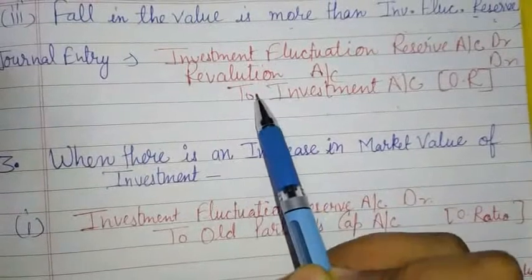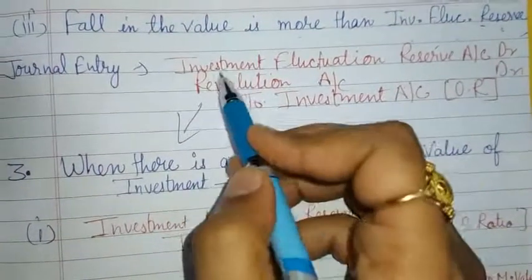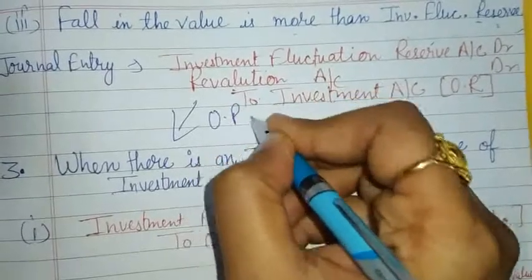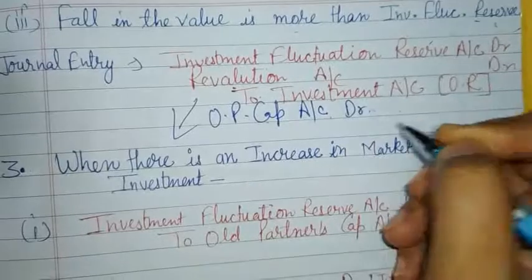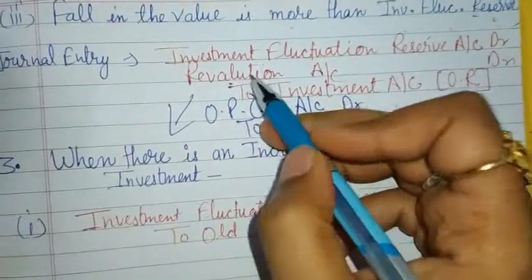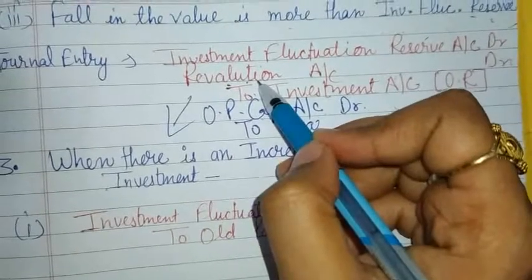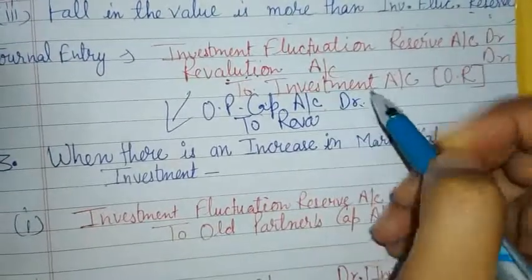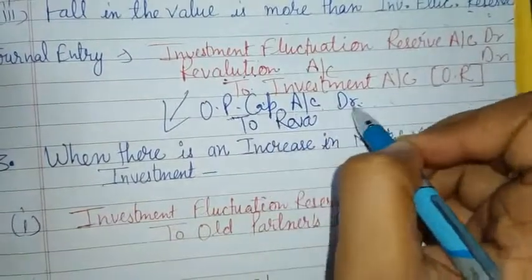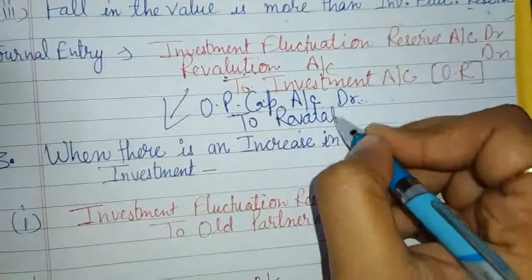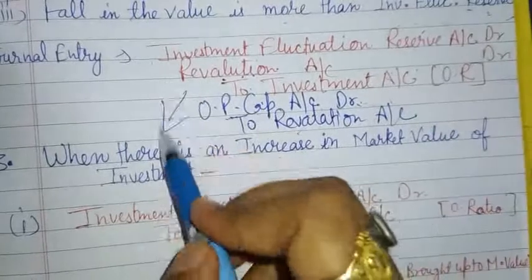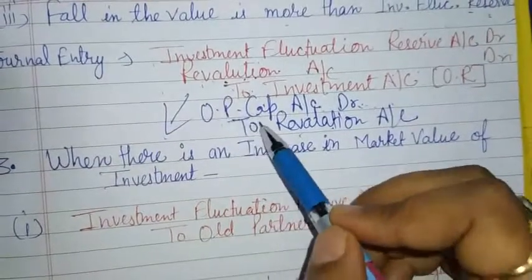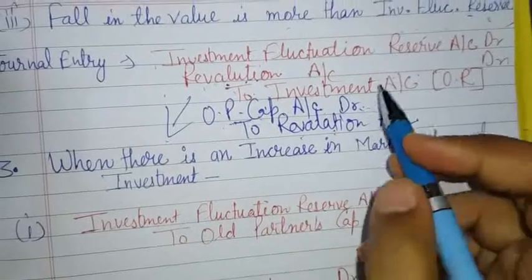Because when the Revaluation Account is debited, one more entry must be made. The amount written off to Revaluation represents a loss, and this loss will be borne by the old partners in their old profit sharing ratio. So the entry is: Old Partners' Capital Account debit to Revaluation Account. So in this condition there will be two entries whenever you debit or credit Revaluation Account.